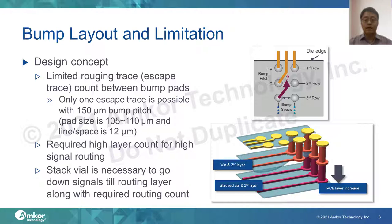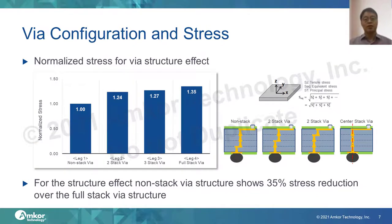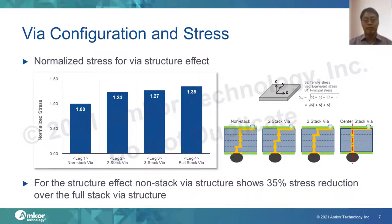Via stacking is unavoidable in high I/O count design and can sometimes cause reliability issues, especially for stacked vias. Here we check for optimum via layout by simulation. On the right side, various via stack configurations are shown. Full layer thermal and stress levels were simulated on the solder joint. Non-stack, two-stack, three-stack, and full-stack mean the stacked via count on the solder joint. As shown in simulation results on the left side, the full-stack via has 35% more stress, and even a two-stack via shows a 24% increase. So, the stack configuration should be minimized to ensure packaging and board reliability.